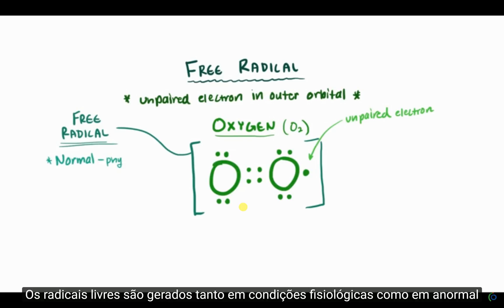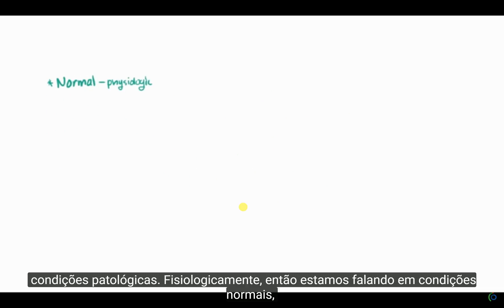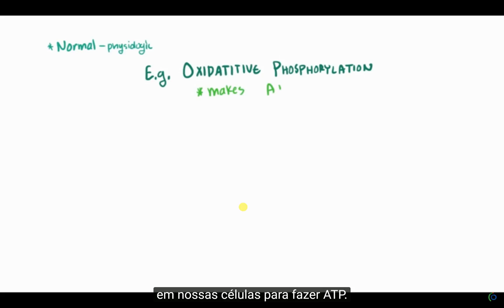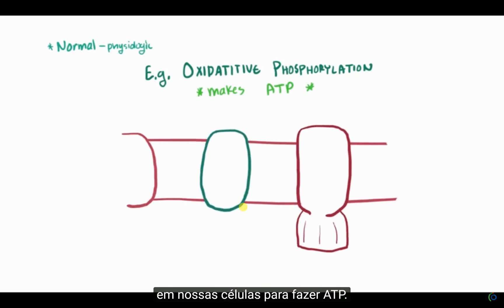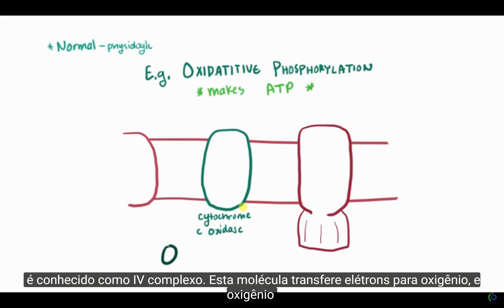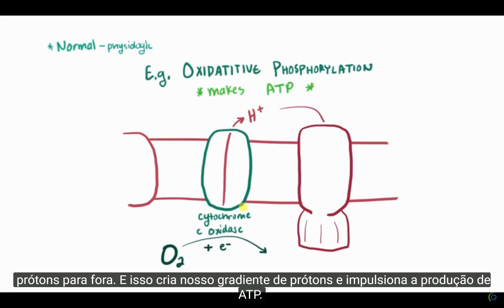Free radicals are generated both normally in physiologic conditions and abnormally in pathological conditions. Physiologically — so in normal conditions — it can happen during oxidative phosphorylation, which is this super important process in our cells to help make ATP. During this process, you've got a molecule called cytochrome C oxidase, or complex 4. This molecule transfers electrons to oxygen, and oxygen gladly accepts those electrons, which causes the mitochondrial matrix to pump protons out, creating our proton gradient and driving the production of ATP.